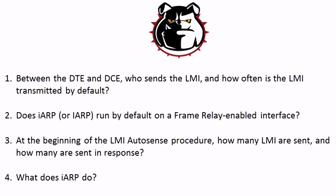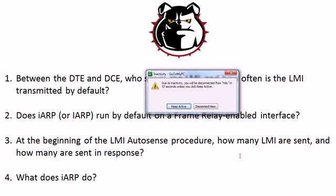Now question three: at the beginning of the LMI autosense procedure, one of each kind of LMI is going to be sent. How many is that? That's 3. And a little homework assignment — if you can't name those three LMI types immediately, you need to bone up on that; I've got some videos on YouTube that'll help. How many are sent in response? One. Three LMI are sent by the initiator of the process and the recipient answers with one, in the form of the one that the recipient is using.